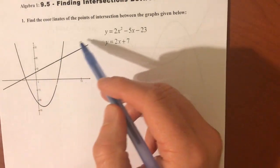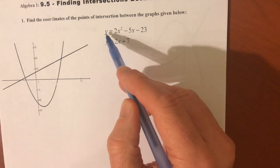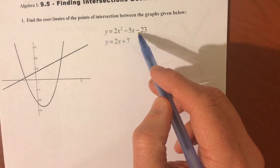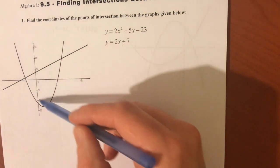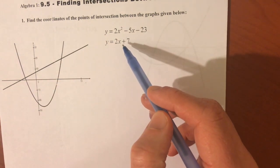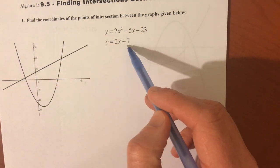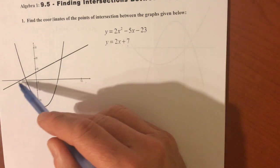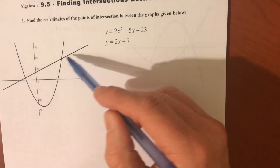So number one, we're trying to find the intersection between y equals 2x squared minus 5x minus 23, that's that parabola right there opening up, and y equals 2x plus 7, that's a line with a y-intercept of 7 and a slope of 2.